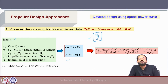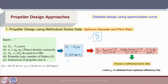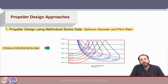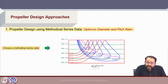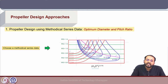We choose a particular methodical series data and get J and ηo from the optimum efficiency line. In this method, a different version of open water charts is used where the expression is related to 1/J for different P/D ratios. A pink line shows the optimum efficiency line. This follows the class of BP-delta charts discussed under methodical series data for propellers, where delta equals 1/J in the BP-delta diagram.